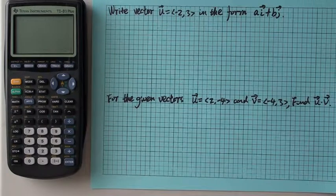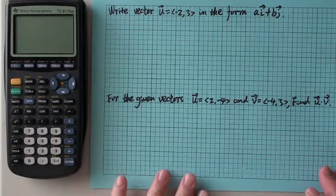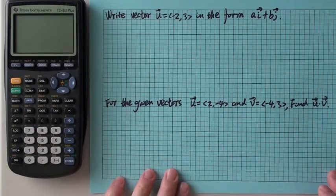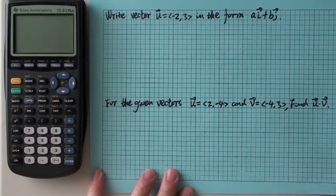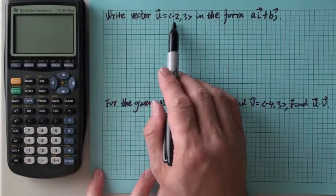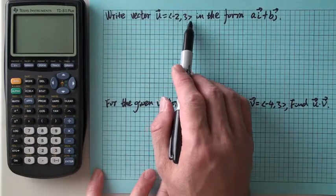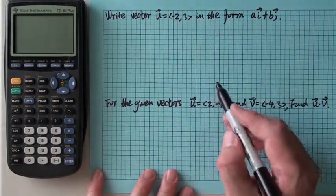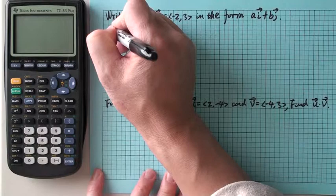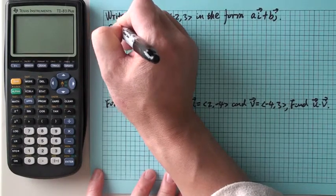In this lecture, we'll look at these two examples. The first one is to write vector ⟨-2, 3⟩ in the form aī + bĵ. What's the meaning of those things?